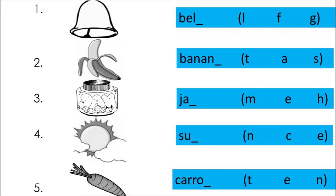Number three — the picture is jam. What is the missing last letter? Is it M, E, or H? Number four — the picture is sun. What is the missing last letter? Is it N, C, or E? Number five — the picture is carrot. What is the missing last letter? Is it T, E, or N?